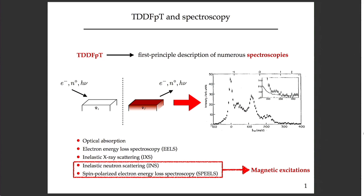With TDDFT we can model different spectroscopies. Depending on the perturbation, we can compute different responses. If we perturb a system by a beam of electrons, neutrons, or photons, we can measure different responses. For example, we can study optical absorption spectroscopy, electron energy loss spectroscopy, inelastic x-ray scattering, inelastic neutron scattering, and spin polarized electron energy loss spectroscopy to obtain spectra. In this talk I'm going to concentrate on magnetic excitations, these last two spectroscopies.